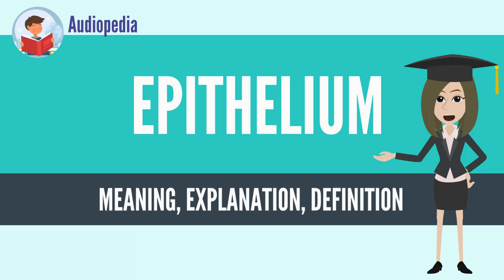These can be arranged in a single layer of cells as simple epithelium — either squamous, columnar, or cuboidal — or in layers of two or more cells deep as stratified epithelium, either squamous, columnar, or cuboidal.